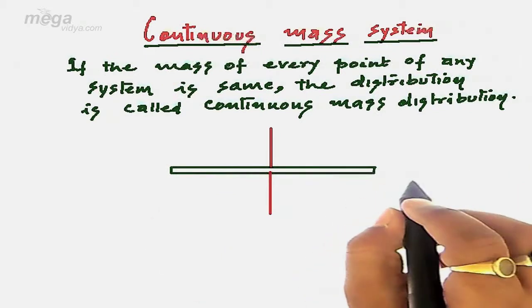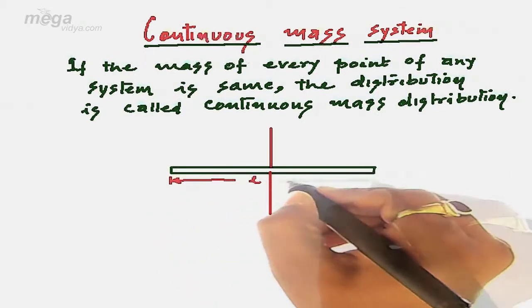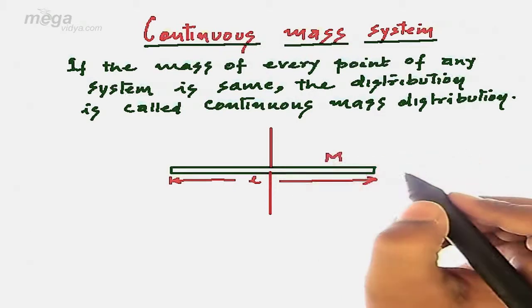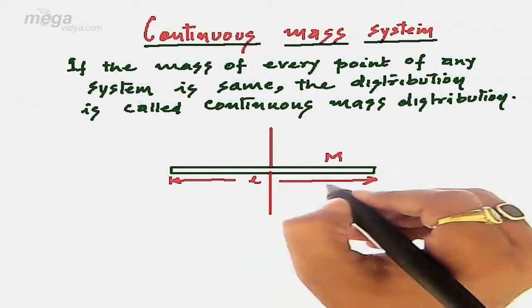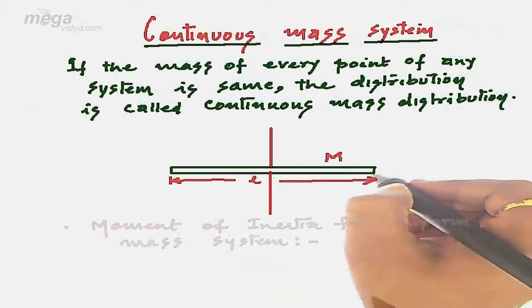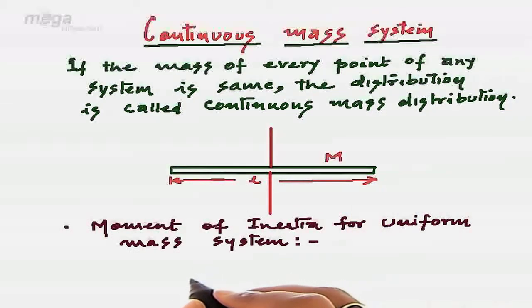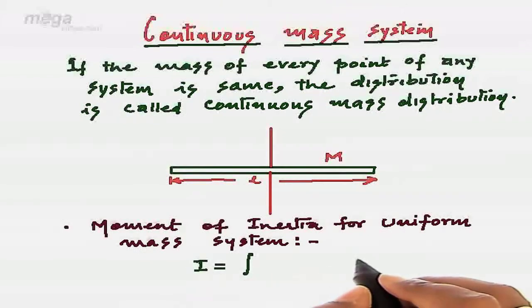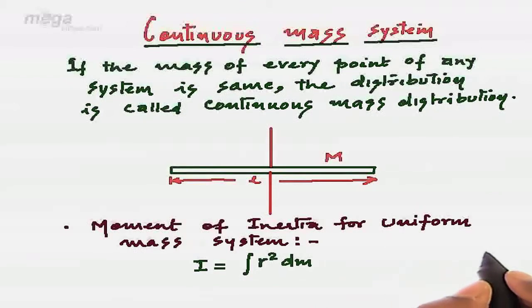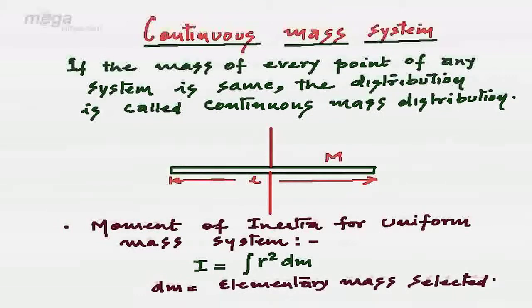Let us consider this rod having length l and total mass m. Each and every part of the rod is uniform and thus it can be considered as a uniform mass system. Now the moment of inertia for uniform mass system may be given as the summation will be replaced by integration of r^2 multiplied by dm, where dm is the elementary mass and r is the distance of that elementary mass from the axis.